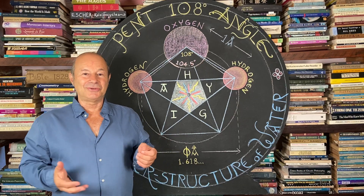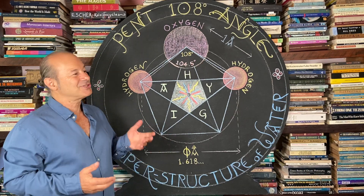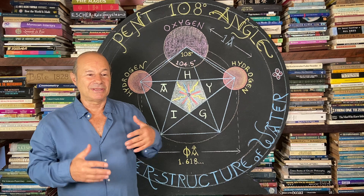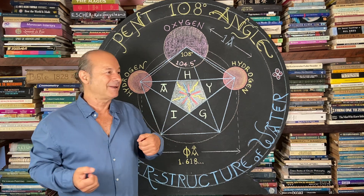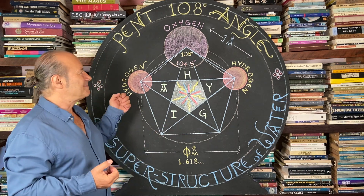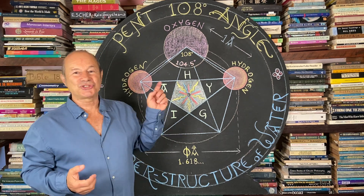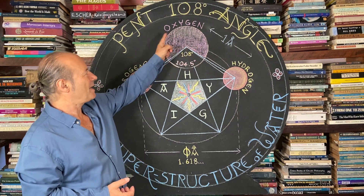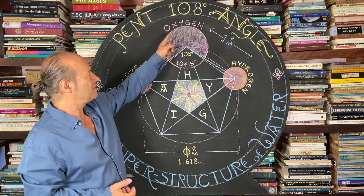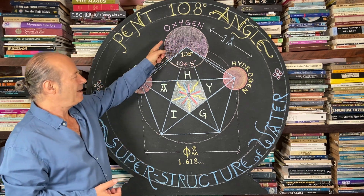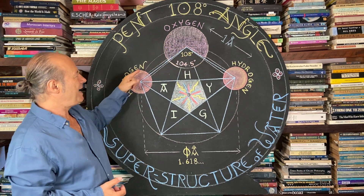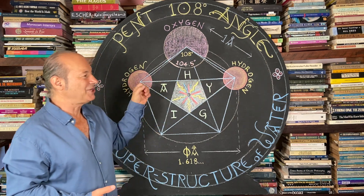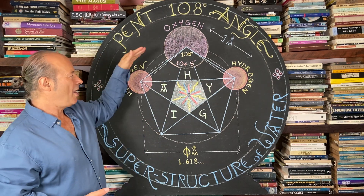We all learned at school that the molecular structure of water, the most abundant substance on the planet, is made up of H2O. What that means is that we have a large oxygen atom hinged to two hydrogen atoms, so we call it H2O.